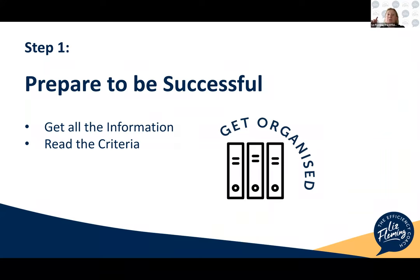We need to make sure we read the criteria properly — two things: can we actually apply, and does our project fit the program guidelines? If a grant is for $50,000 and your project is $200,000, can you fund the other $150,000? If not, we need to think about whether it's appropriate to apply. Some grants also require a co-contribution: if your project is $100,000, you apply for $50,000 and fund the other $50,000 yourself. Every grant is different — they follow some general guidelines, but every single application is always different.